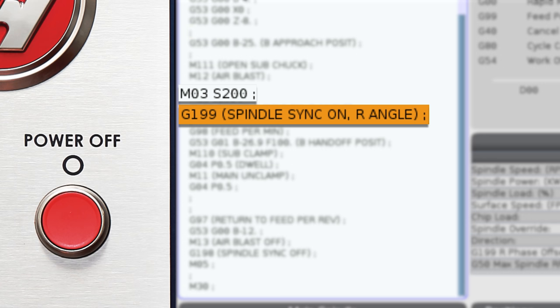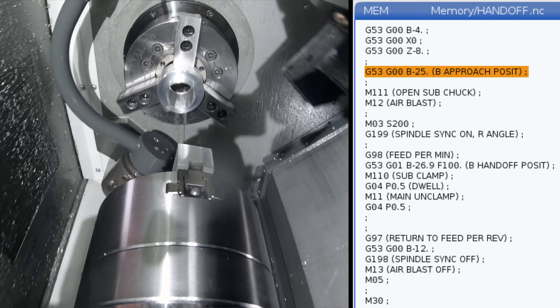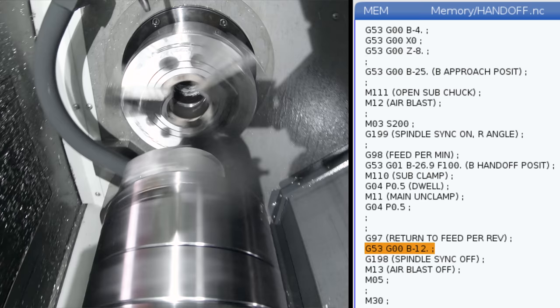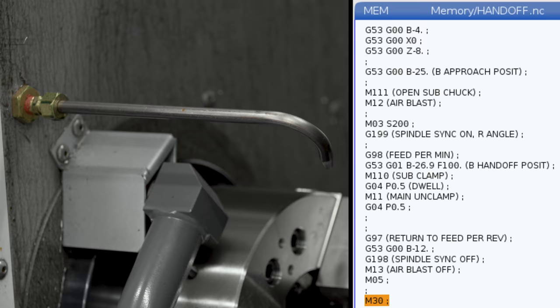This is a much better part hand-off, with a little air blast, both spindles turning, and some well-timed chuck open and closed commands. Now we'll finish things up with a G198 to turn off spindle sync, and we'll turn off that air blast with the M13, and we are ready for that second operation.